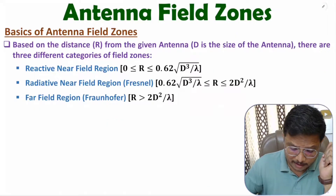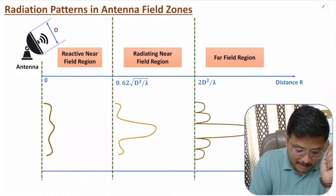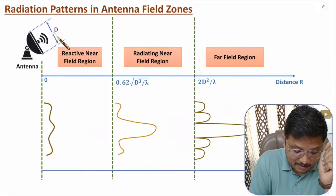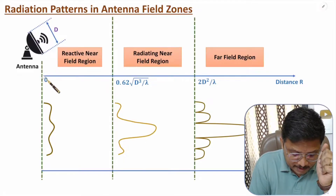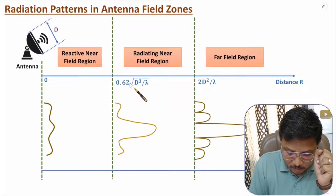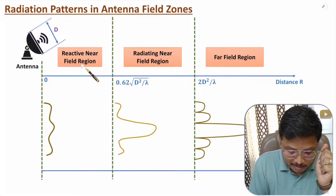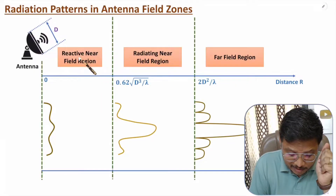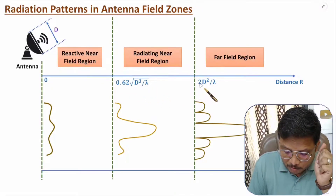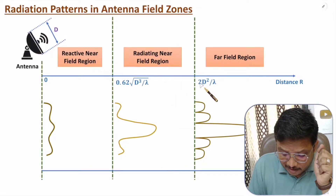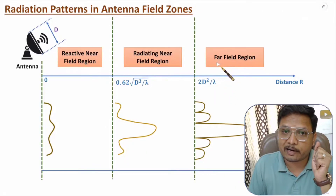Here I have placed an antenna of size d, and we are considering distance from zero onwards. From 0 to 0.62√(d³/λ), this region belongs to the reactive near field region. Between 0.62√(d³/λ) and 2d²/λ we have the radiative near field region, and if distance is greater than 2d²/λ then we have the far field region.